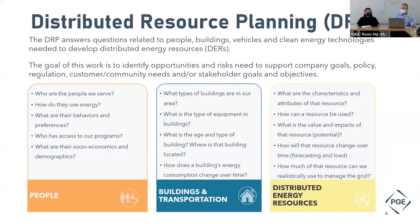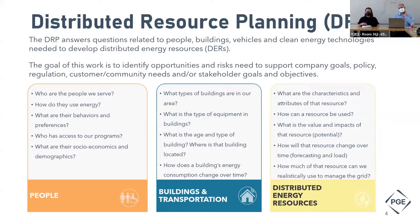So what is distributed resource planning? You can think of it as a type of planning that looks at people, buildings, transportation, and clean energy resources. It's all centered around asking questions about people: who are the people we're serving, what are the types of buildings we're looking at, what are their age and where they're located, and what are the attributes of those resources. Transportation electrification is a good example — you have to think about how people drive that vehicle, how they charge it, and whether you can use it as a demand response resource or during outages. It's really just trying to understand people and technology.